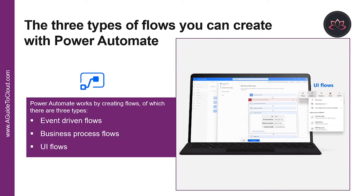There are three types of flows you can create with Power Automate: event-driven flows, business process flows, and UI flows. Event-driven flows are built with a trigger and one or more actions, with a multitude of triggers and actions available thanks to existing connectors. You will see these as My Flows and Team Flows in Power Automate. The only difference is ownership — with a My Flow you are the sole owner, while a Team Flow has more than one owner.